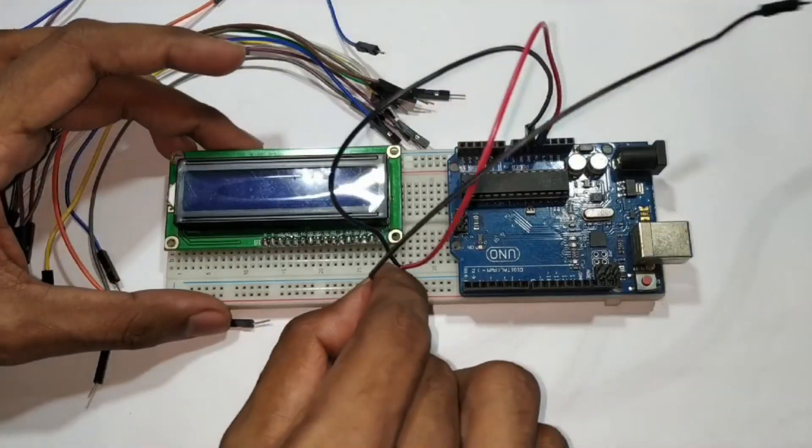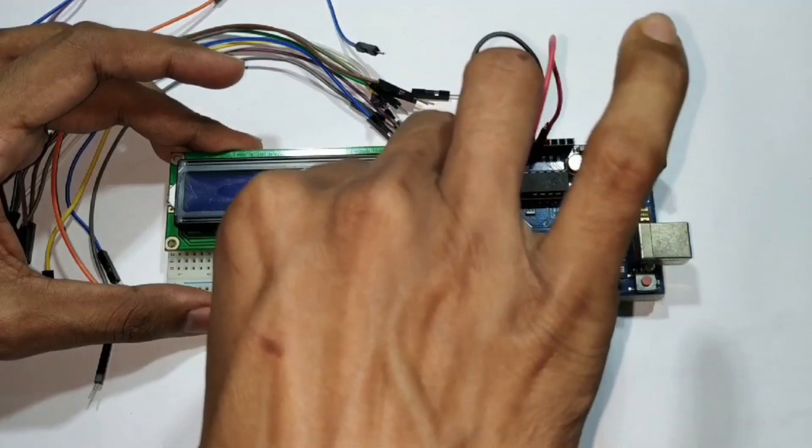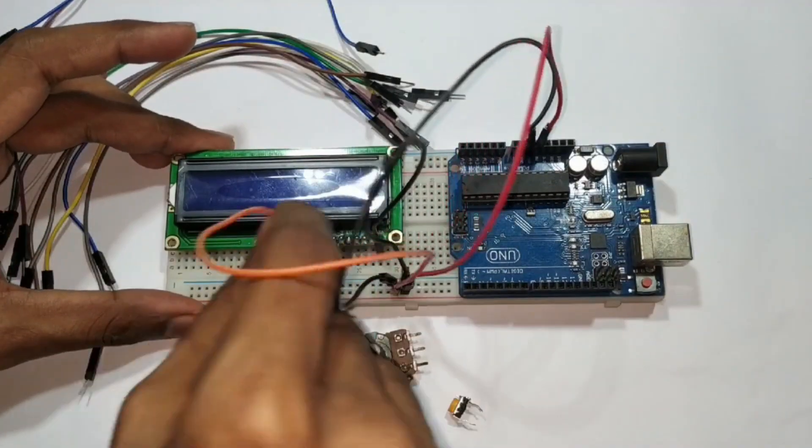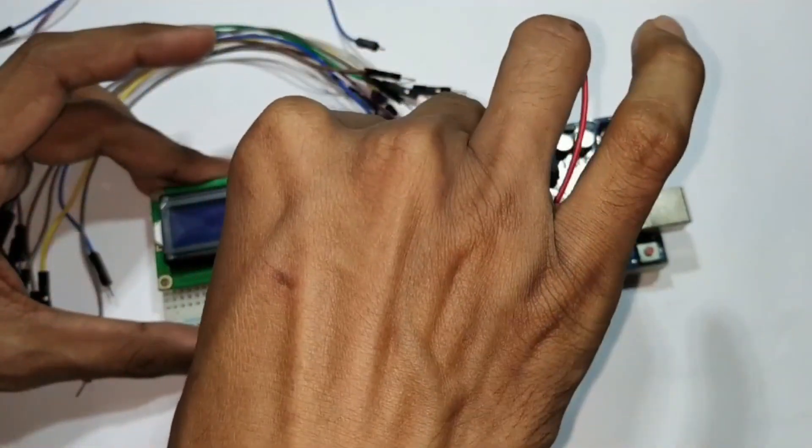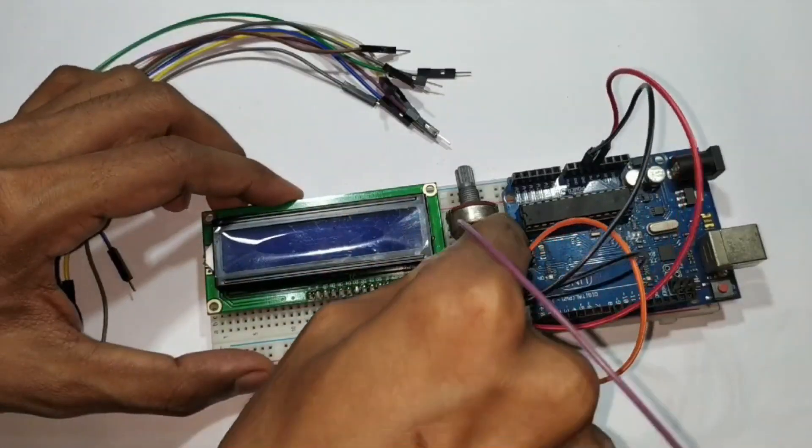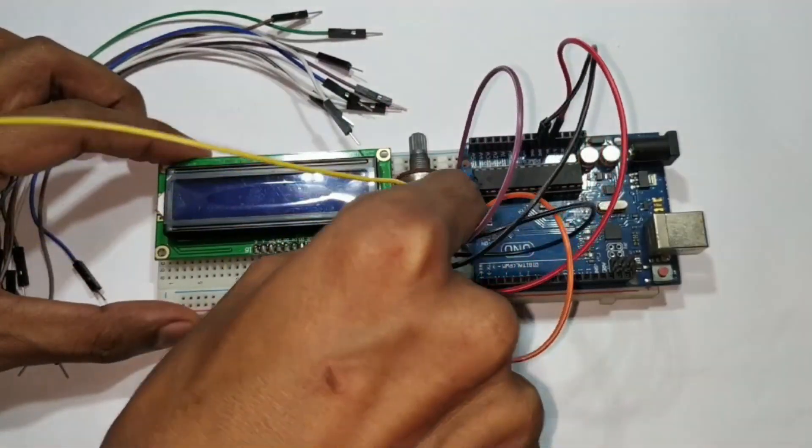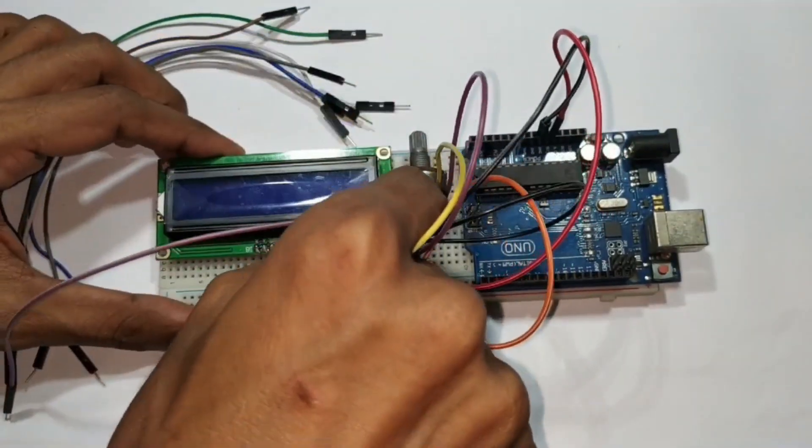Next, LCD VSS pin connected to the ground and VDD pin is connected to the 5-volt. Here, I am going to use a rotary potentiometer or variable resistor whose one terminal is connected to the ground, middle pin is connected to the LCD V0 pin and other terminal of potentiometer are connected to the 5-volt.